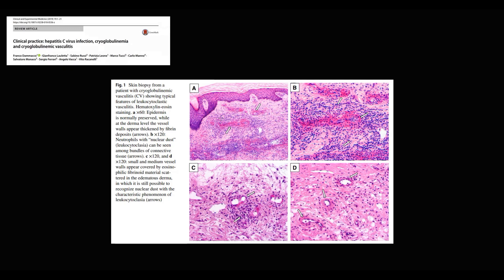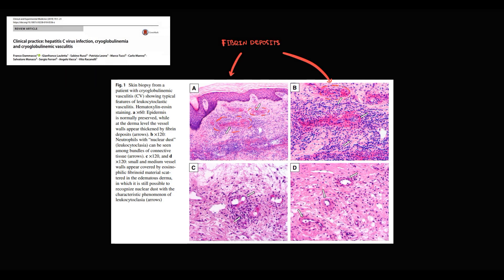On skin biopsy in patients with cryoglobulinemia, deposition of immune complexes provokes inflammation, followed by regeneration through deposition of connective tissue — specifically fibrin. Fibrin deposits are visible on the first two samples. One of the most specific features is neutrophils with nuclear dust. On the last image, inflammation of the vessel also provokes deposition of connective tissue.